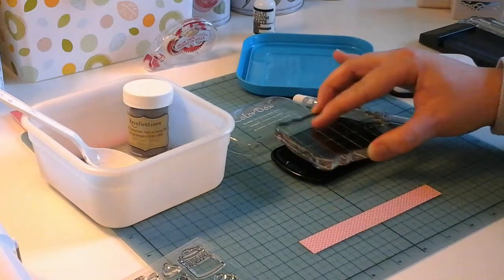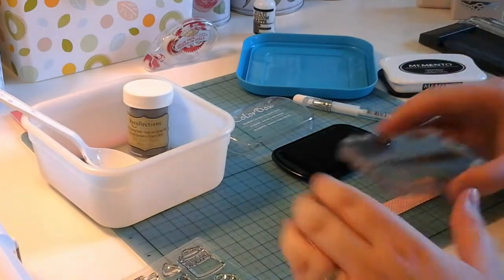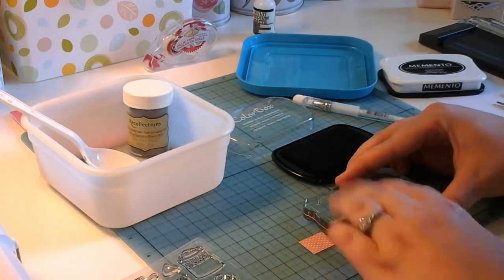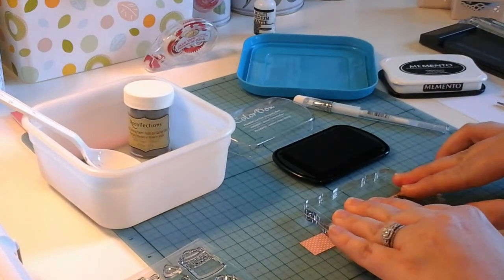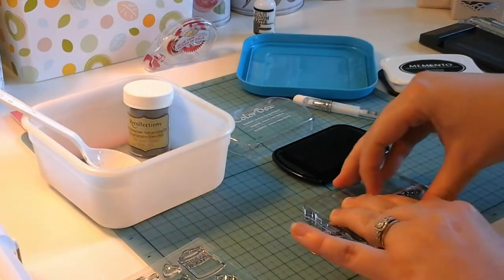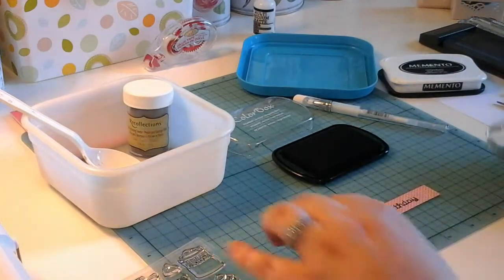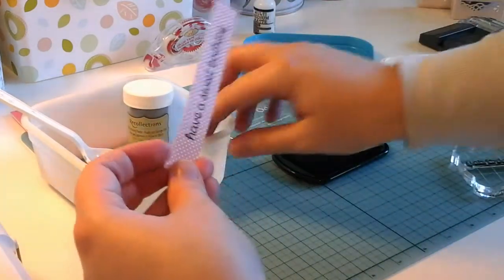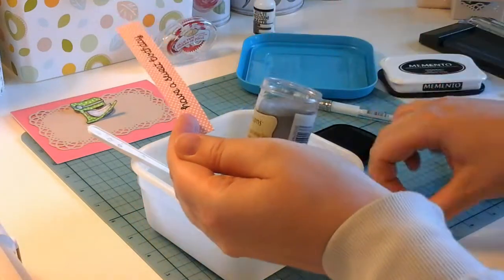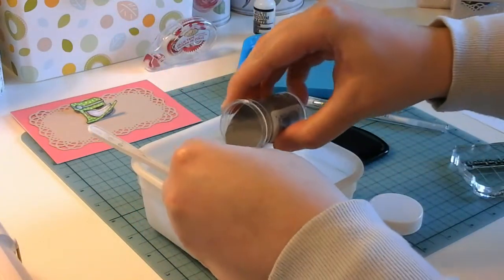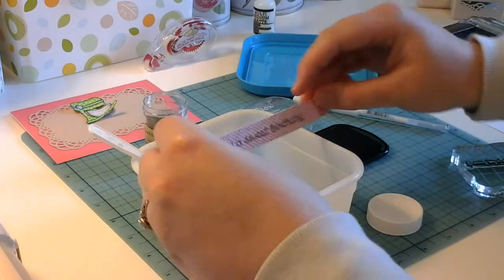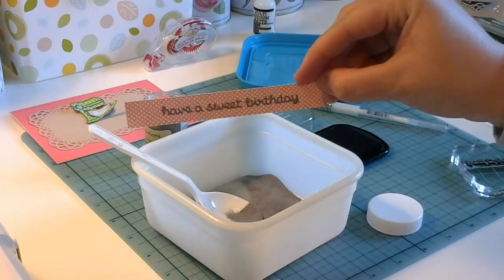Ideally you could use your powder tool on this so you don't have any cling or any finger marks, but I don't have one currently. I will be getting one. So there it is stamped out, the Have a Sweet Birthday. I'm going to go ahead right away and put the silver embossing powder from Recollections right over top of that sentiment. And then just tap it off. That is ready to be embossed.